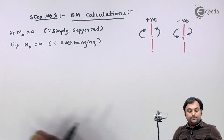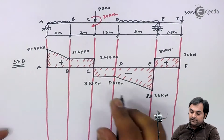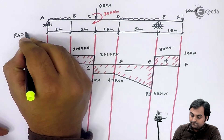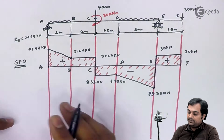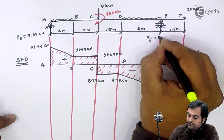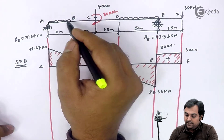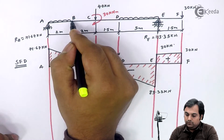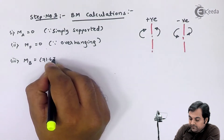Now I will calculate the bending moment at point B. The reaction at A is 71.67 kN and the reaction at E is 113.33 kN. Taking the moment at B, the section to the left has reaction RA producing a clockwise moment, which is positive. So we have 71.67 into 2.